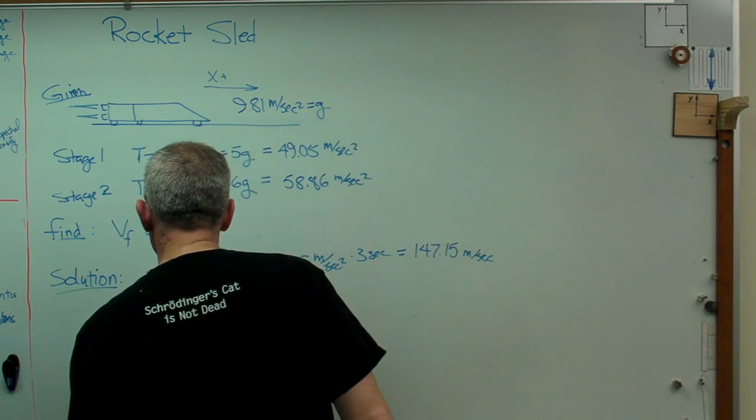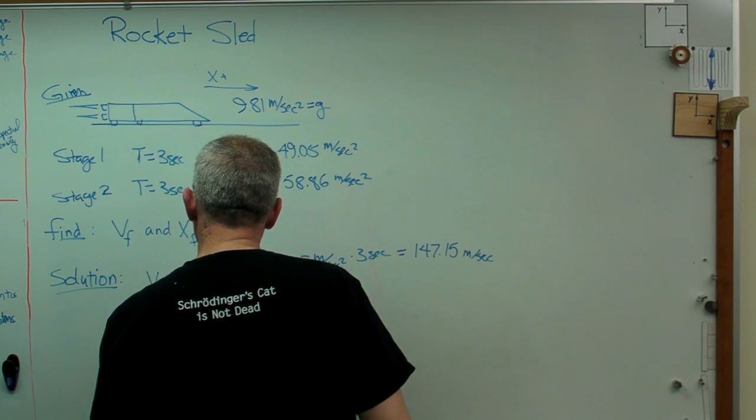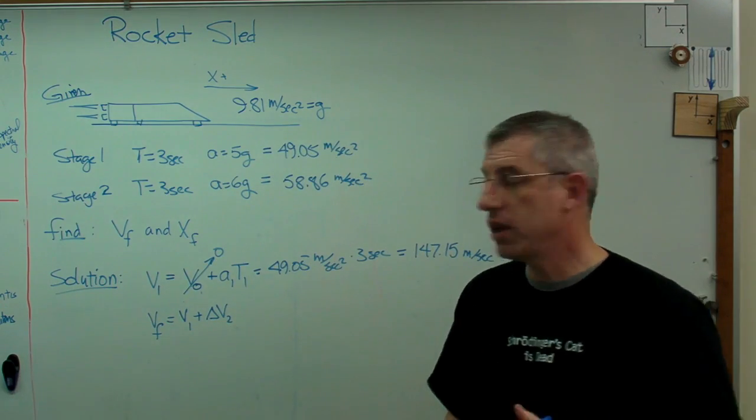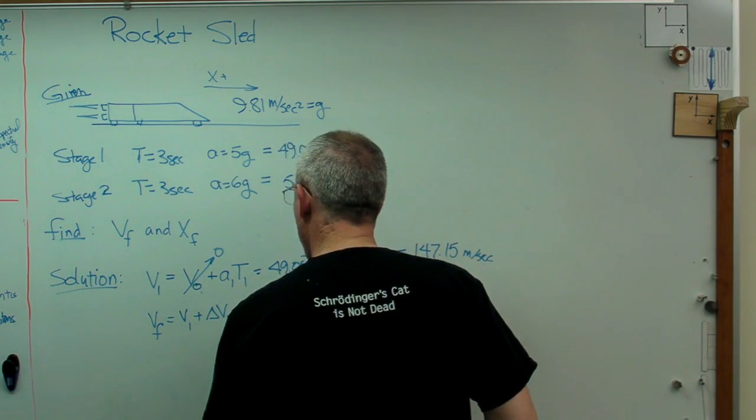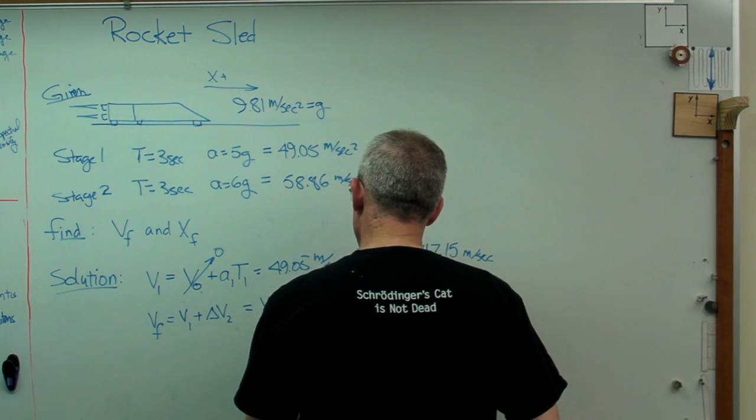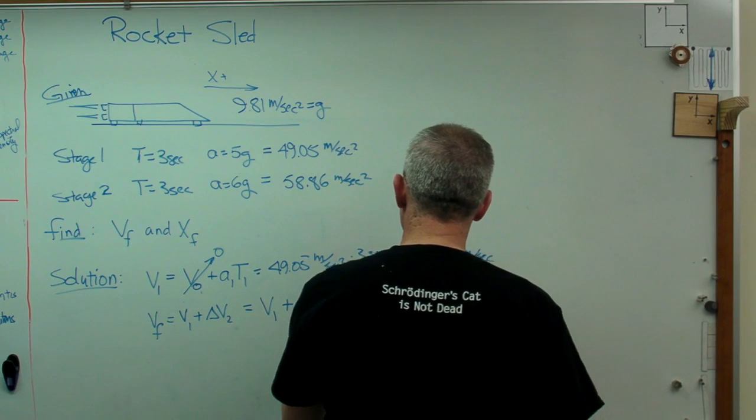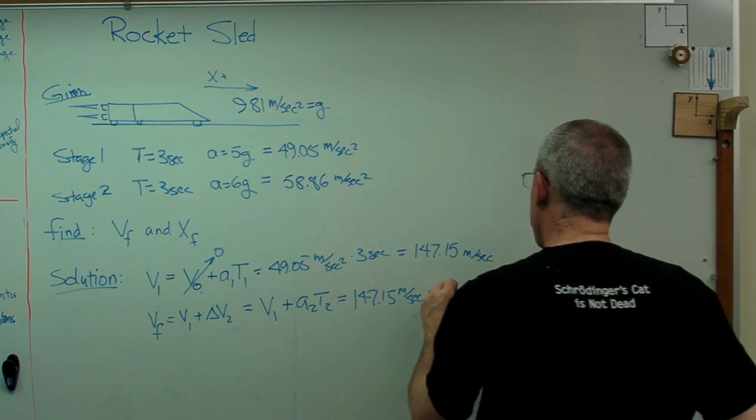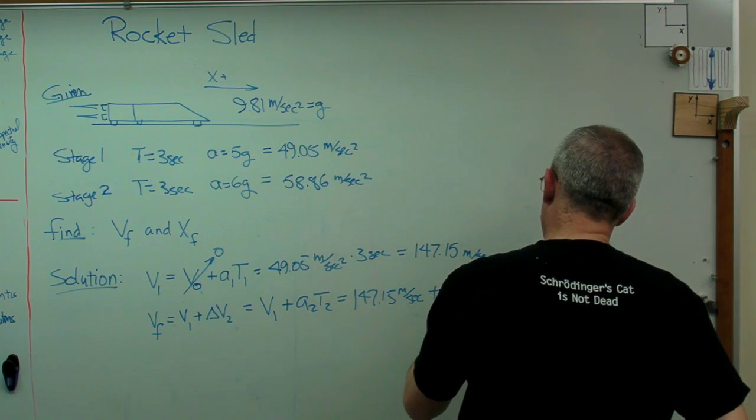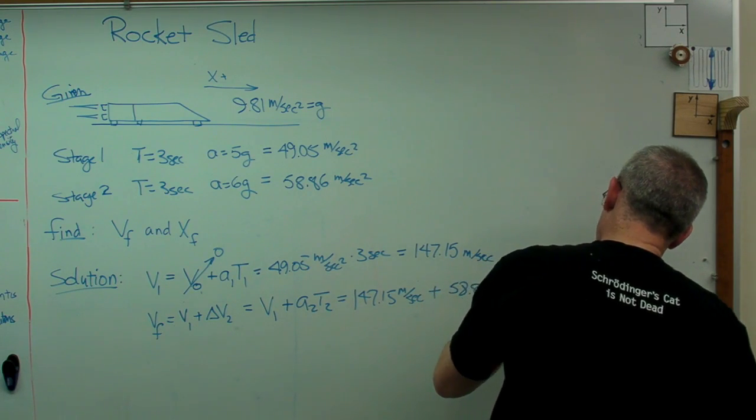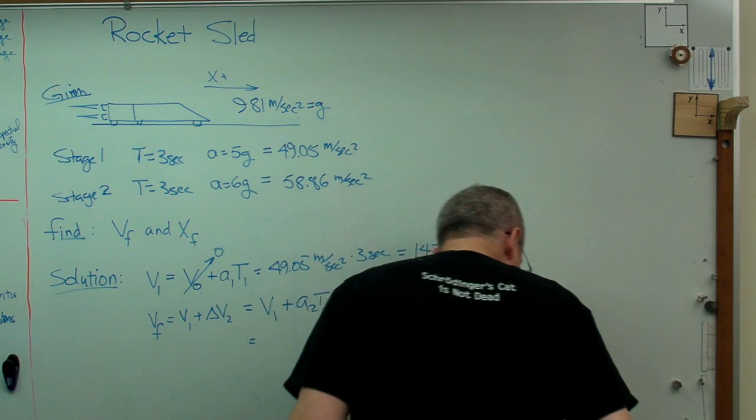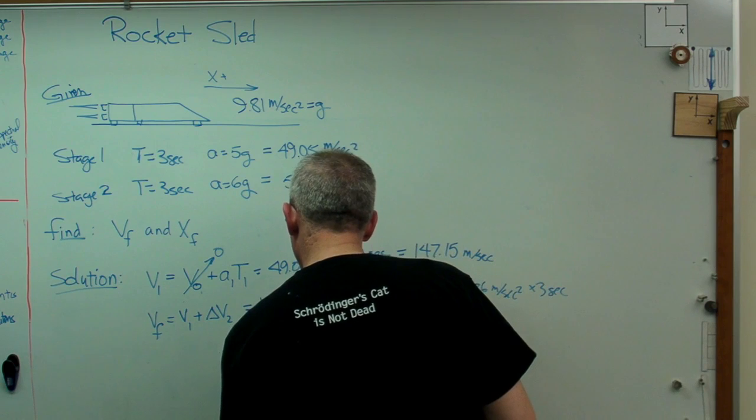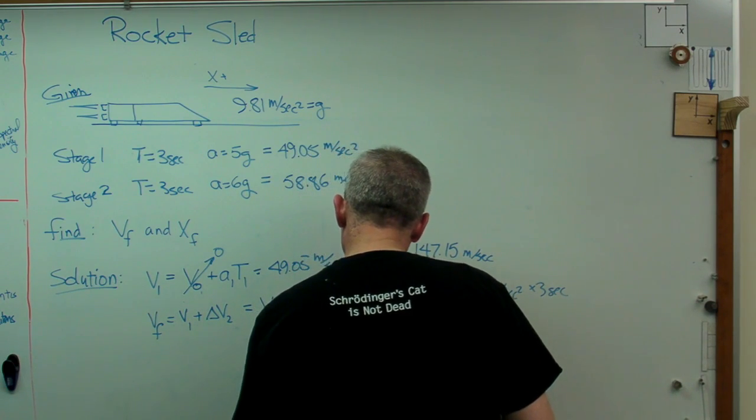And V final is going to be V1 plus delta V2. It's going to be the initial velocity plus the change in velocity from the second stage. Well, that's V1 plus A2 T2. Well, 147.15 meters per second plus now 58.86 meters per second squared times three seconds. And if you work that all out, it turns out to be 323.73 meters per second.